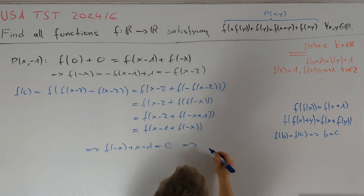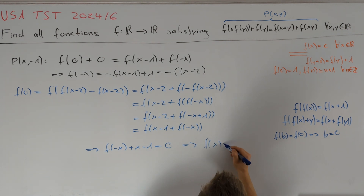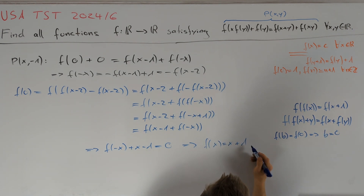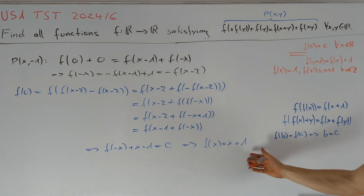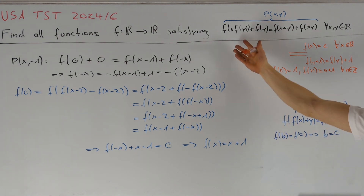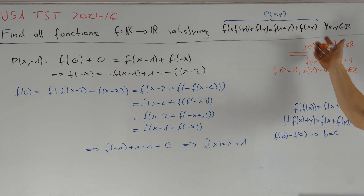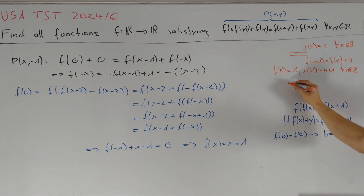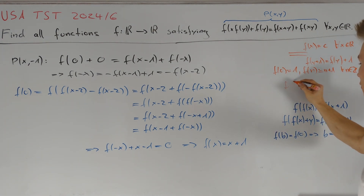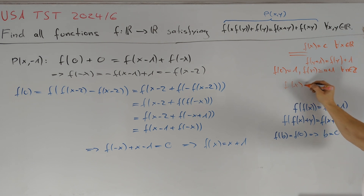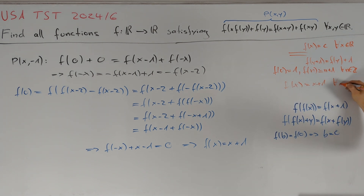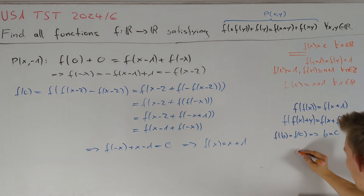This implies f(−x + x − 1) = 0, i.e., f(−1) = 0, which is consistent — and ultimately we obtain that f(x) = x + 1. Plugging f(x) = x + 1 into our original equation confirms it is indeed a solution. Therefore the complete set of solutions is: f(x) = c (any constant) and f(x) = x + 1 for all real numbers x.